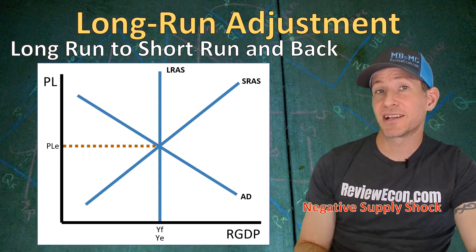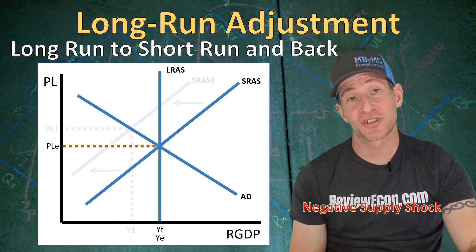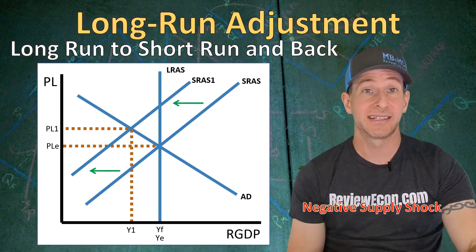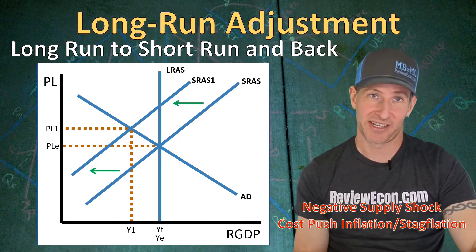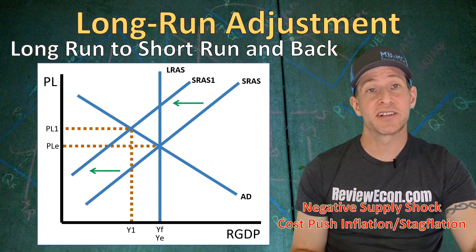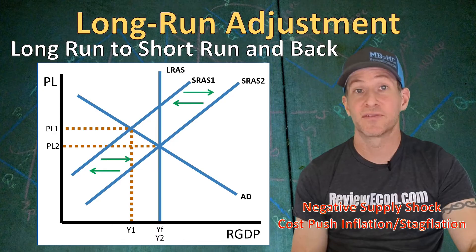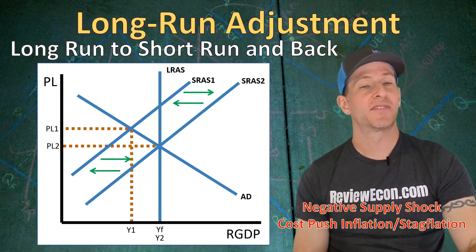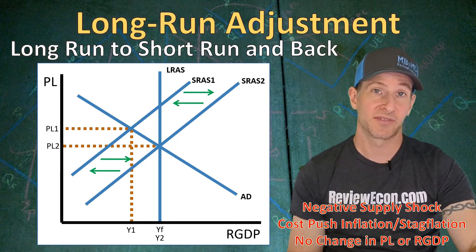If we had a negative supply shock to the economy — perhaps from an increase in oil prices — that causes a leftward shift of the short-run aggregate supply curve. The price level will temporarily rise and real GDP output will temporarily decrease. The economy is now experiencing cost-push inflation, or stagflation, because we have higher price levels with higher unemployment. Those unemployed workers will eventually accept lower wages, meaning lower input costs for businesses, and then the short-run aggregate supply curve will shift to the right, bringing us back to the full employment level of output. In the end, a leftward shift of the short-run aggregate supply curve will cause no change in real GDP or the price level in the long run.